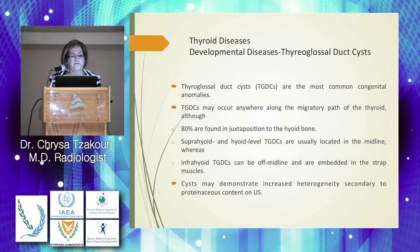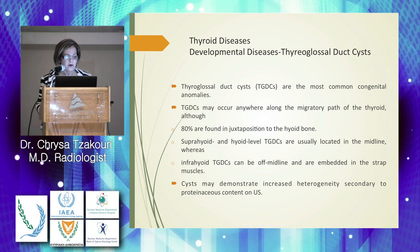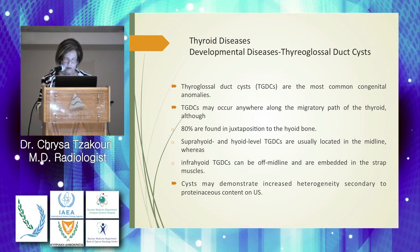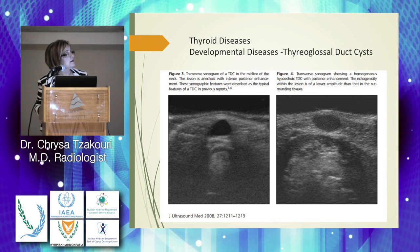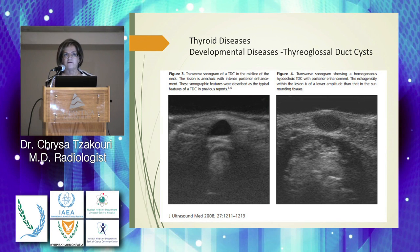Moving to thyroid diseases, starting from developmental disease: thyroglossal duct cysts may demonstrate increased heterogenicity secondary to proteinaceous content on ultrasound. A complete cyst shows posterior acoustic enhancement in the center, while a lesion that appears hypodense but not purely cystic contains proteinaceous tissue. These cysts are typically found in three anatomical positions, usually above the isthmus.